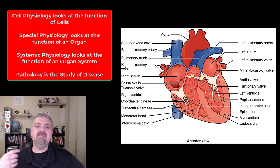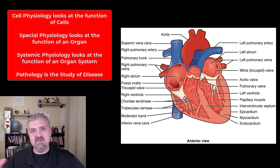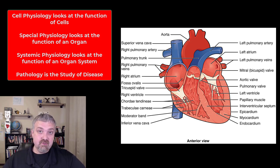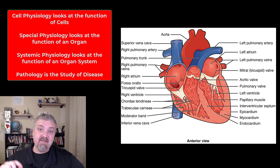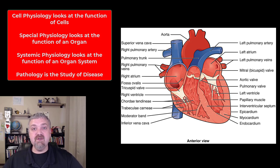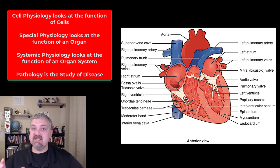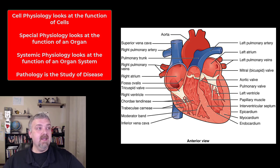Now here are the subspecialties of physiology — instead of looking at how the heart is built, we look at what it does. Cell physiology looks at the function of individual cells. Special physiology looks at the physiology of a specific organ. Systemic physiology, like the name implies, looks at the function of an organ system, and we'll spend a lot of time on how the different organs or parts of an organ system work together.